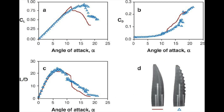We implemented these vortex-generating tubercles into our wind turbine to hopefully drastically improve its efficiency. We modeled the tubercle patterns as 9 to 11 delta wing-like tubercles, which decrease in size as they near the tip of the flipper, with the largest tubercles being the 1st and 4th.